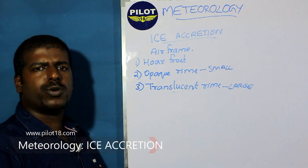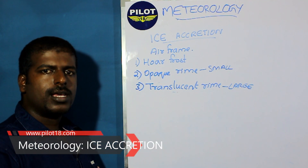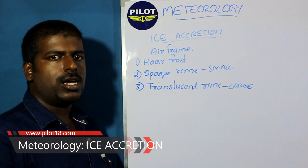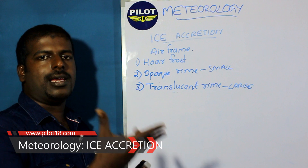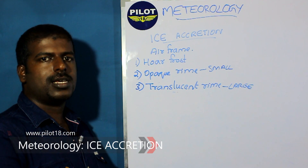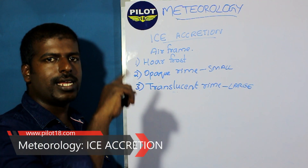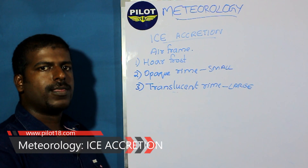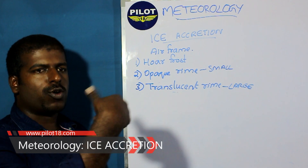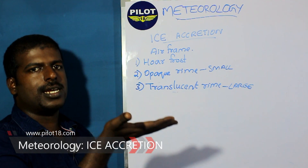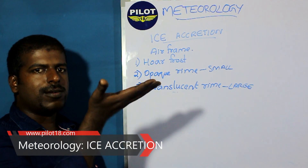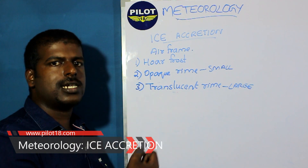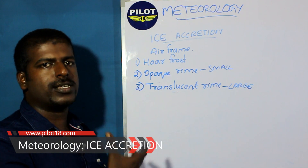Are there methods to prevent icing? Yes. One method is using heating. Heating coils are present in propeller blades and even wings. When switched on, the coils start getting heated and simply remove the ice, because if the surface is heated, ice cannot stick to it.